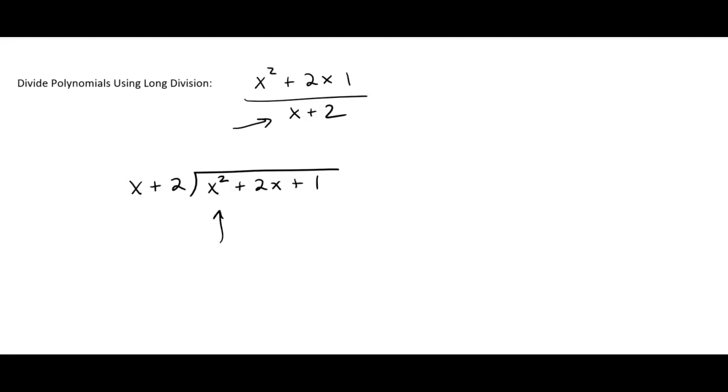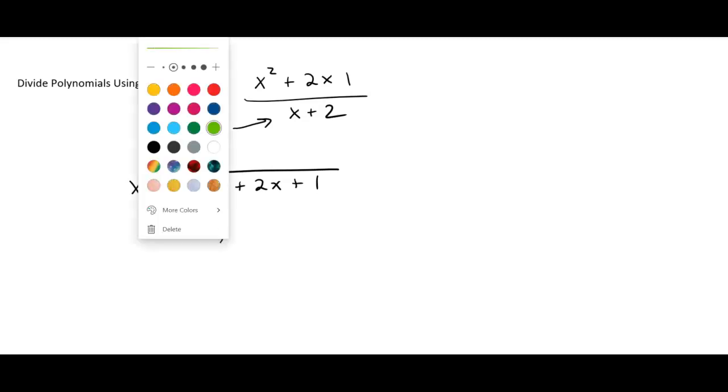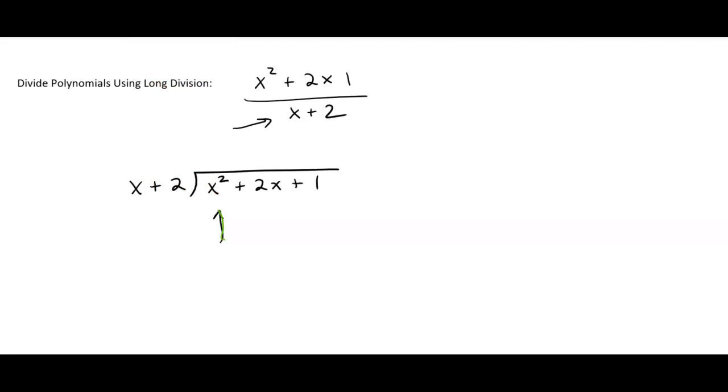things. One, you have to make sure that the exponents are going from largest to smallest, so it has to go in order: x² then the x term then the constant. Or if you